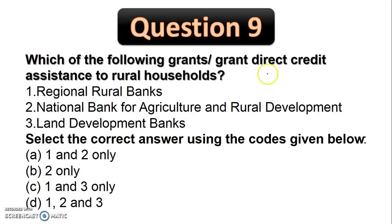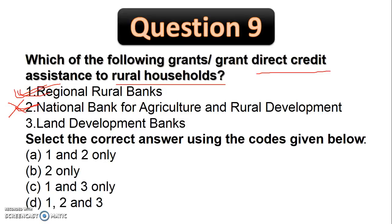Which of the following grants direct credit assistance to rural households? RRBs grant loans to rural households. NABARD is the apex body for development of rural areas, but NABARD does not give credit directly to rural households — they give funds to rural institutions engaged in the development of agriculture and rural areas. The Land Development Bank gives long-term agriculture funds to farmers. So the answer is options one and three only.